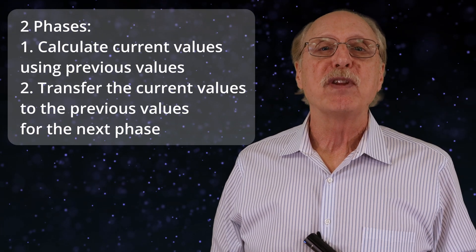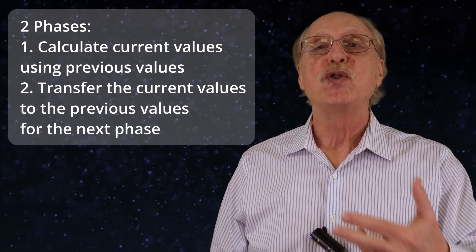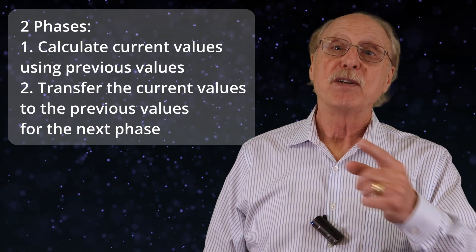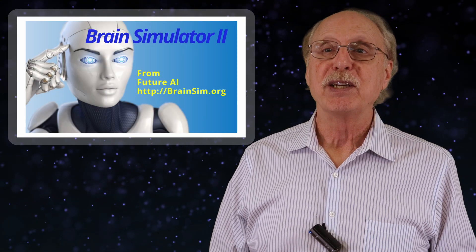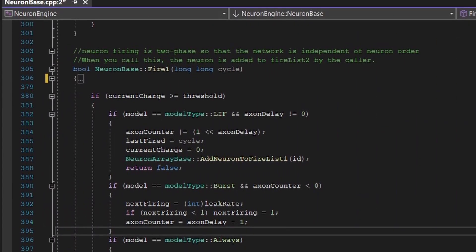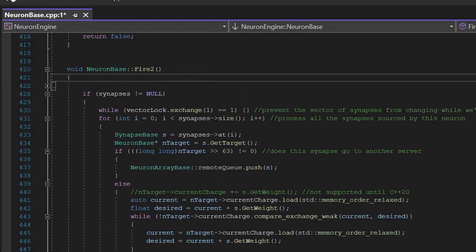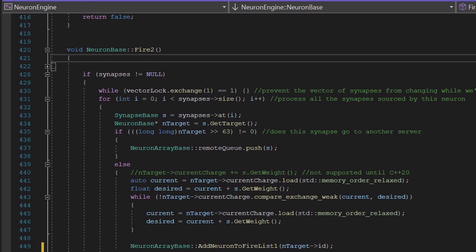To correct this problem, the perceptron algorithm needs two phases with two internal values. There is an implementation of this two-phase algorithm in the open-source Brain Simulator 2 in the file neuronbase.cpp. This is a C++ program. I suggest you check it out.